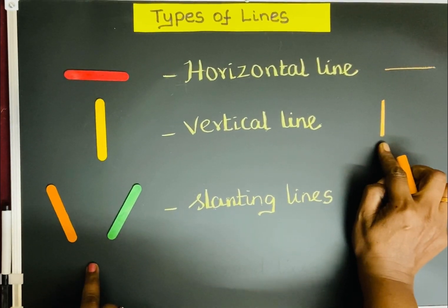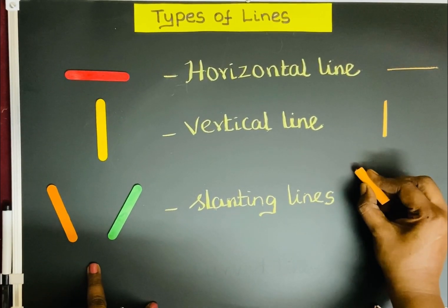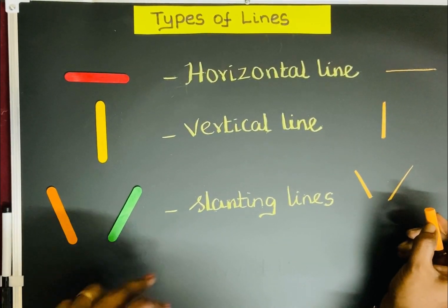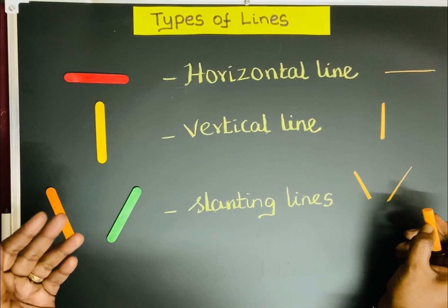This is slanting lines. Slanting lines can be this side or it can be this side. We use straight lines to draw shapes like...